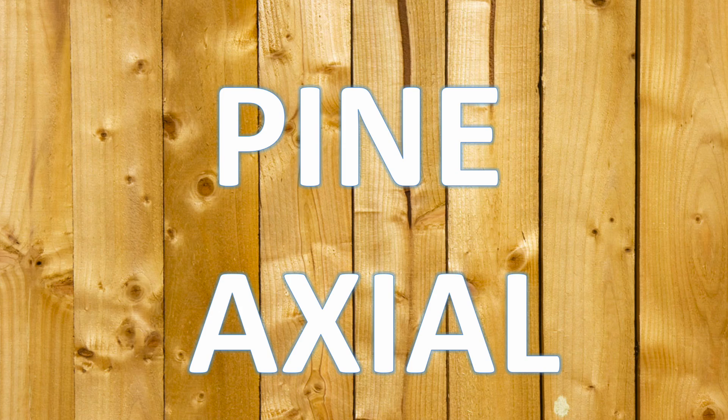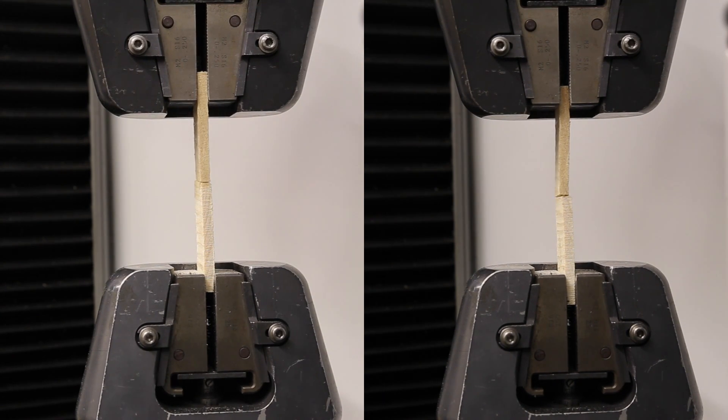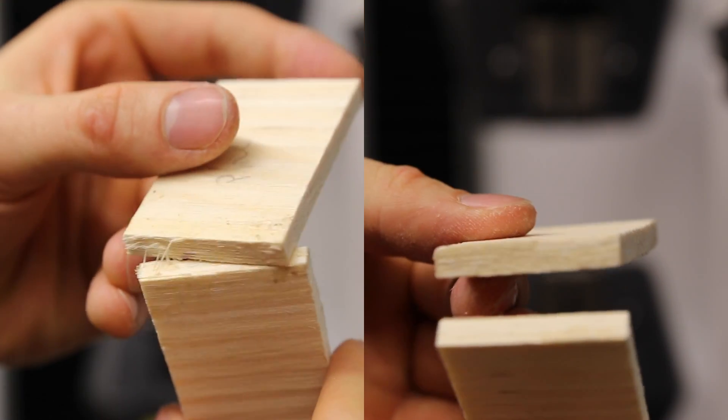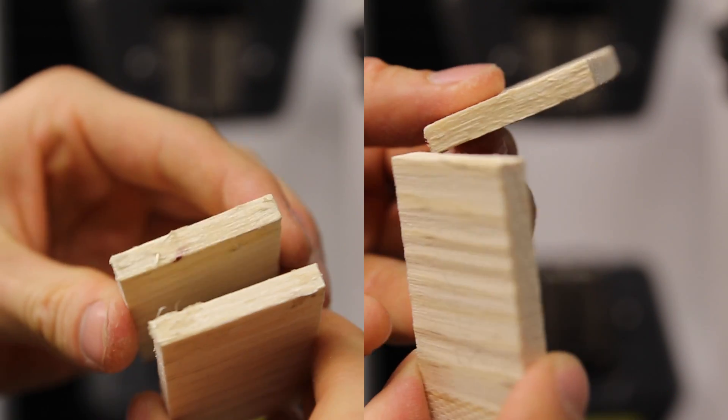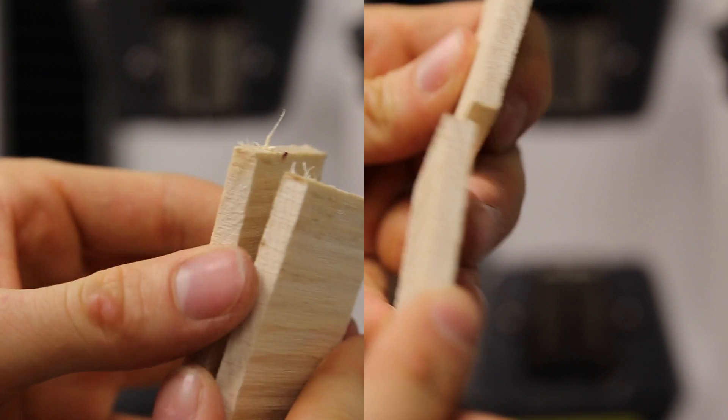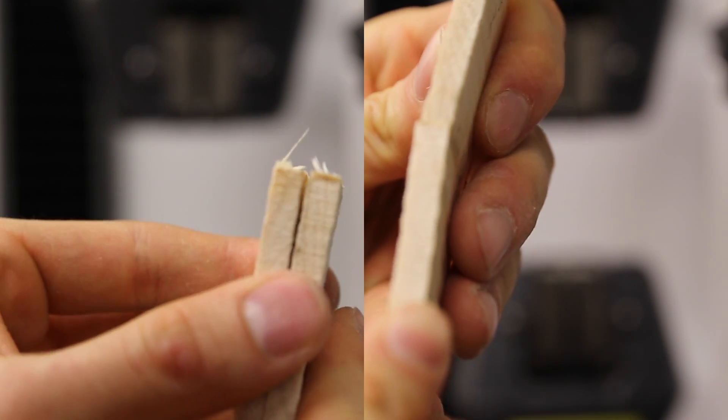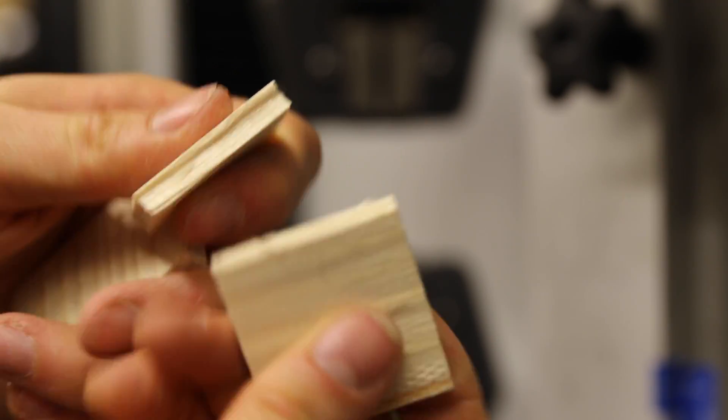Moving on to axial testing, starting with pine. The sample on the right broke cleanly through the glue line. On the left, the wood frayed a bit on one end, but it's also still pretty much along the glue line. This is just to double check that I have the wood oriented correctly.